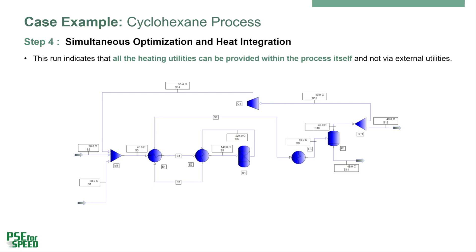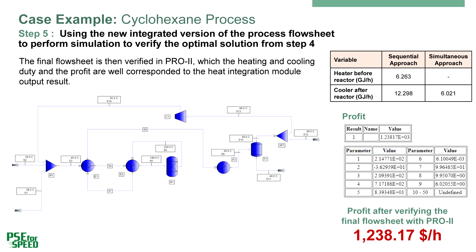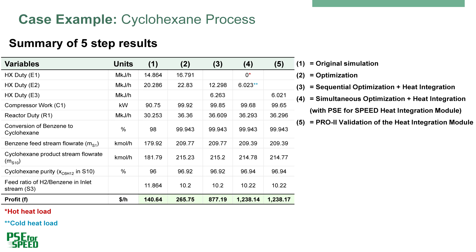The new flowsheet obtained through the simultaneous strategy is now introduced to the process simulator. We verify that all the needed heating utility in the process can be obtained from the process itself. For step 5, the validation: we perform the simulation without the process optimization and heat integration by defining the new integrated process flowsheet and optimal design parameters. The simulation confirms the operation as determined through the simultaneous strategy after step 4.